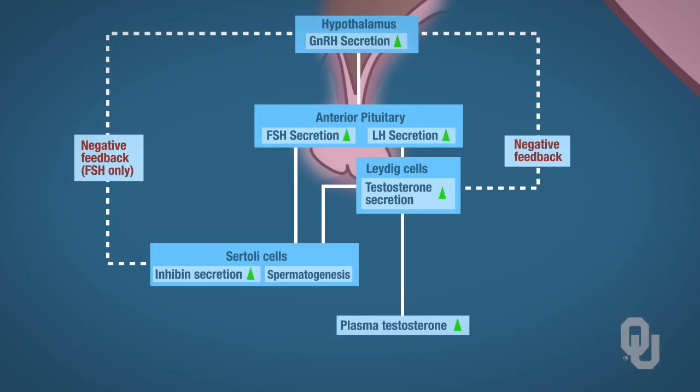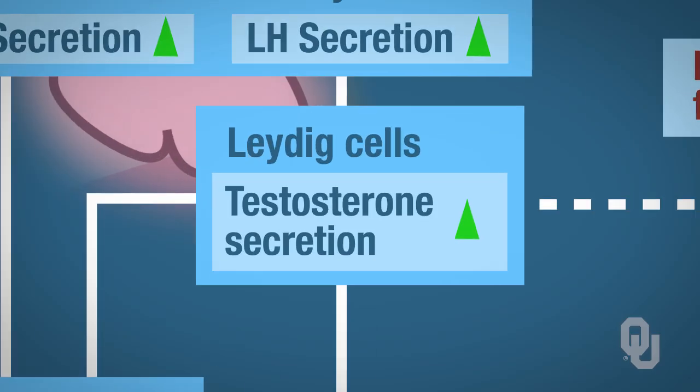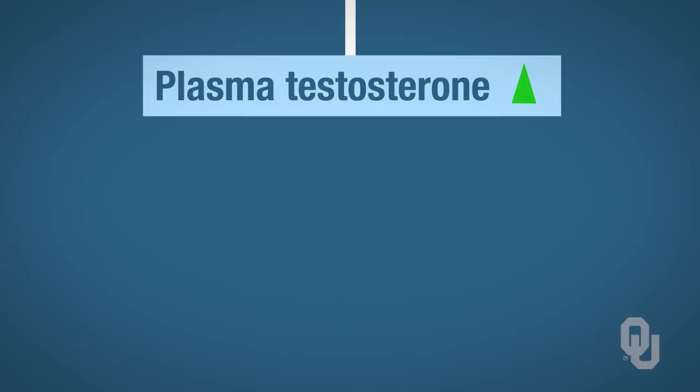LH, as we discussed in previous videos, will stimulate the Leydig cells of the testes to synthesize and secrete testosterone. Testosterone will then enter the plasma and cause target cell responses.